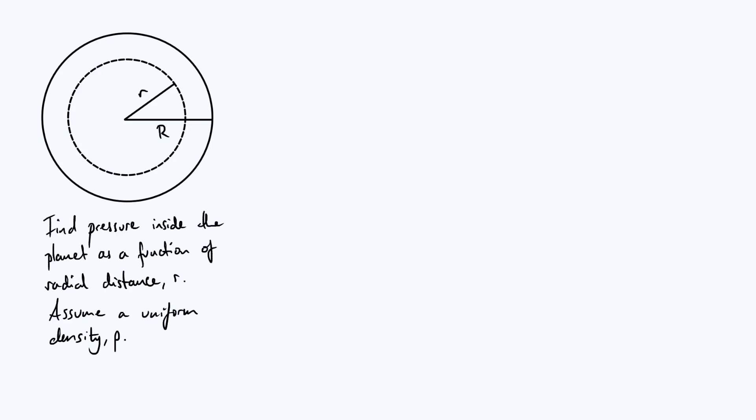But we can still get an order of magnitude estimate of the pressure at various different distances, and the method that we're going to discuss can be generalized quite easily to non-uniform densities if you know the density as a function of radial distance.